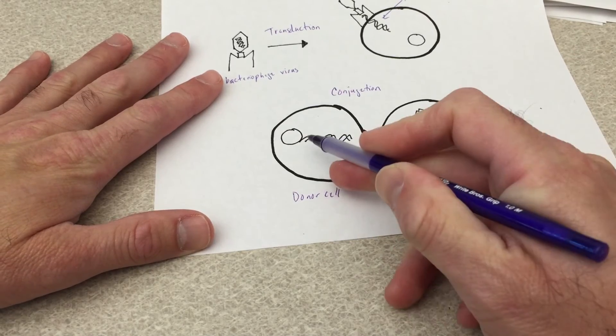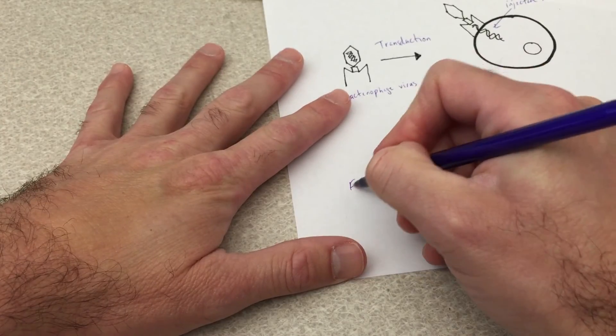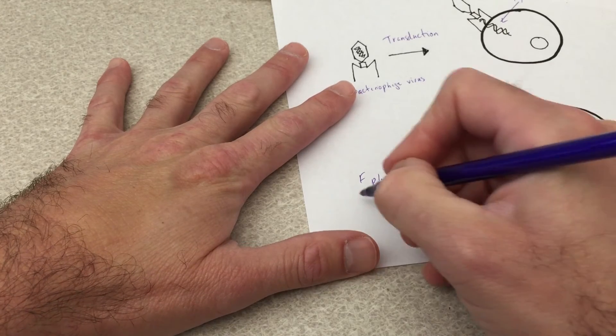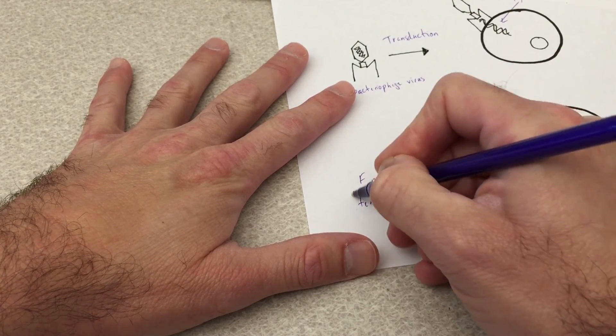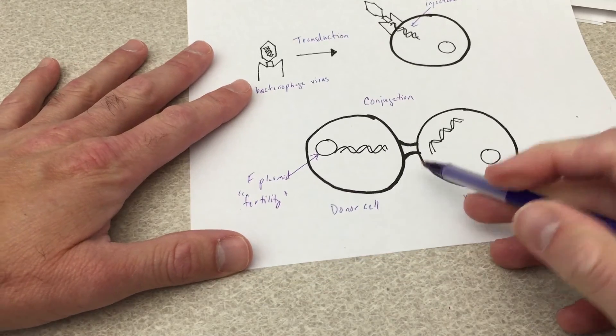Now the donor possesses genes on its plasmid, so this right here is an F-plasmid. That stands for fertility plasmid, because fertility plasmids encode mating bridges.